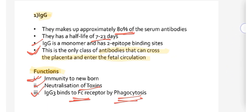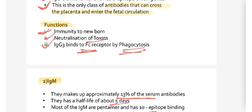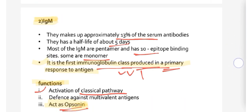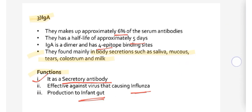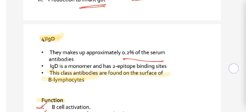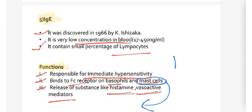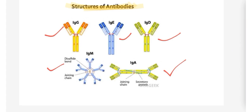Then we saw IgG and its function, IgM and its functions, IgA, IgD, and at last we saw the IgE and the structures of all antibodies.